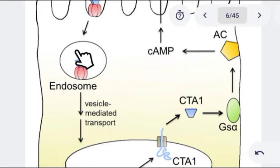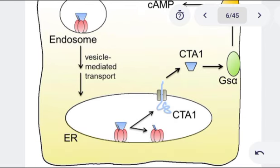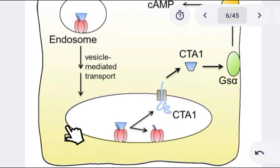The cholera toxin enters via endocytosis inside an endosome — simply a vesicle containing certain substances. This endosome is going to take this cholera toxin to the endoplasmic reticulum. I am talking about the pathogenesis of cholera here, because once we understand the pathogenesis, we are going to talk about how it causes water loss, diarrhea, and dehydration.